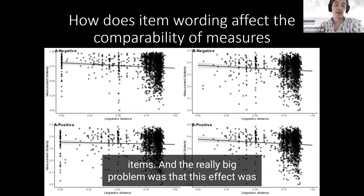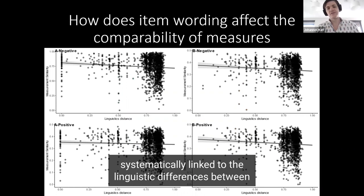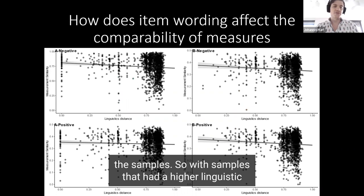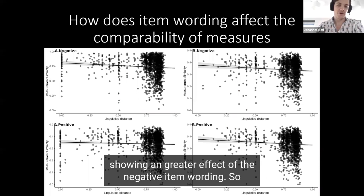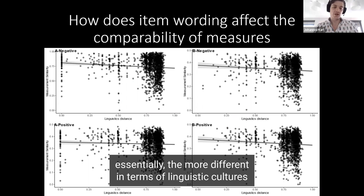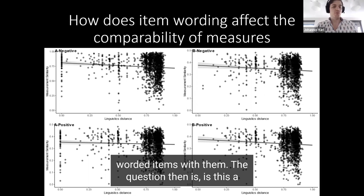The really big problem was that this effect was systematically linked to the linguistic differences between the samples. So samples that had a higher linguistic difference, so their language morphology was different, showed a greater effect of the negative item wording. Essentially, the more different in terms of linguistic cultures are, the more difficult it becomes to employ negatively worded items with them.